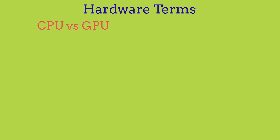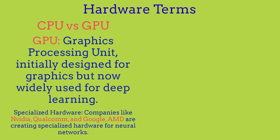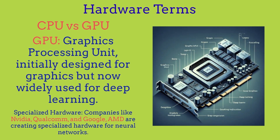The other hardware term is the GPU, which stands for graphics processing unit. It's initially designed for graphics but can also be used for deep learning nowadays. GPUs were previously used for computer graphics to run games and 3D modeling, but now they're also used for deep learning. The main companies that make specialized hardware are Nvidia, AMD, Google, and Qualcomm, and these companies are also starting to create specialized hardware for neural networks.